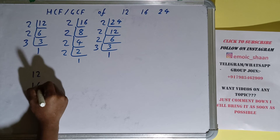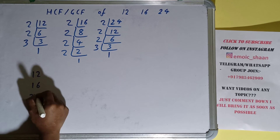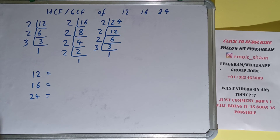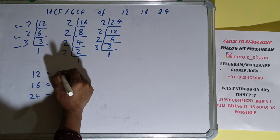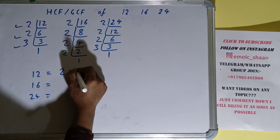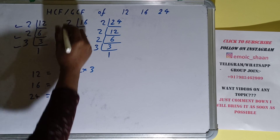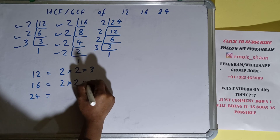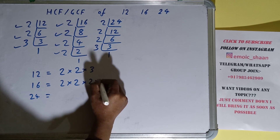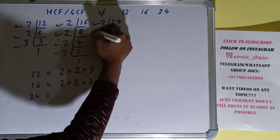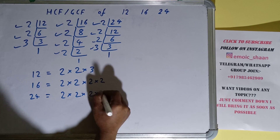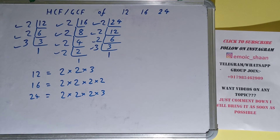The next thing we need to do is write down each number with its respective prime factors. The prime factors of 12 are 2 × 2 × 3. The prime factors of 16 are 2 × 2 × 2 × 2. The prime factors of 24 are 2 × 2 × 2 × 3.